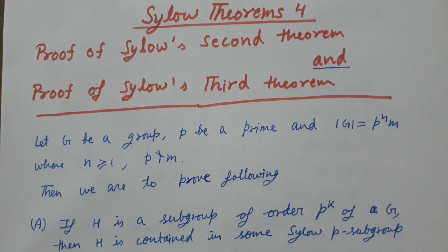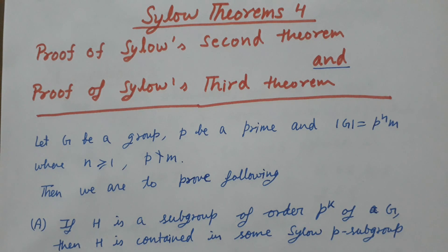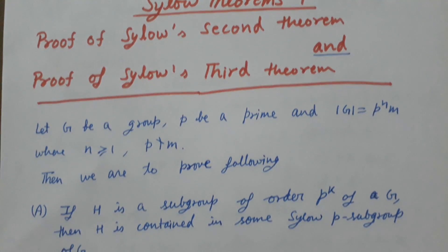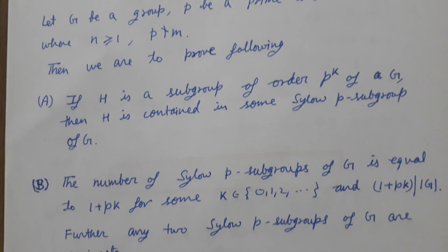Welcome to the fourth lecture in the series on Sylow theorems. In this lecture we will prove Sylow's second theorem and Sylow's third theorem. Let G be a group, p be a prime, and suppose p divides the order of G. The order of G can be written as p^n times m, where p does not divide m.